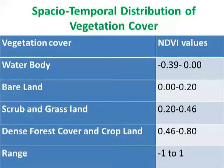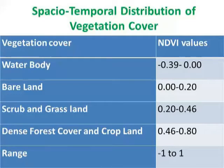This is the table which shows the spatiotemporal distribution of vegetation cover. If vegetation cover is water body, the NDVI values range from −0.39 to 0. If vegetation cover is bare land, the NDVI values range from 0 to 0.20. If vegetation cover is scrub and grassland, the NDVI values range from 0.20 to 0.46. For dense forest cover and cropland, the NDVI values range from 0.46 to 0.80. The overall range of NDVI values is from −1 to 1.